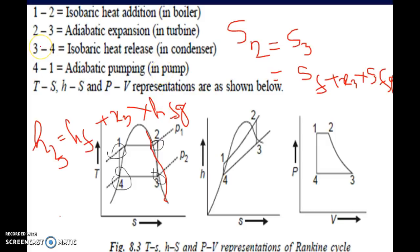h4 can be calculated as it equals hf, because point 4 lies on the saturated liquid line. The value of hf is obtained from the steam table at the condenser pressure.